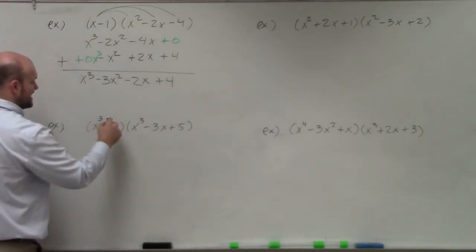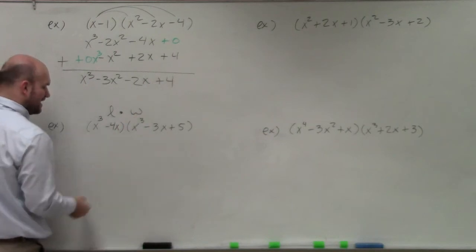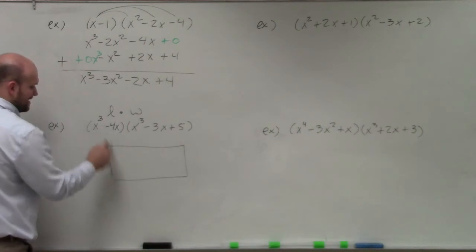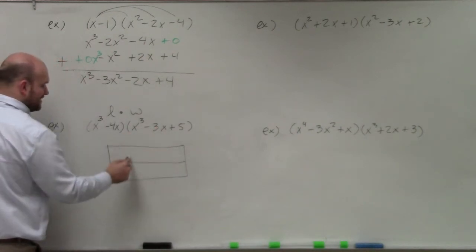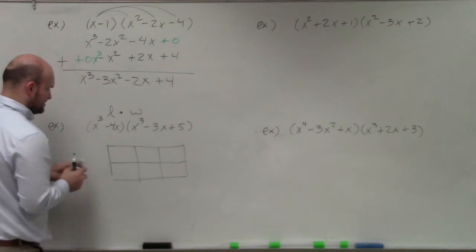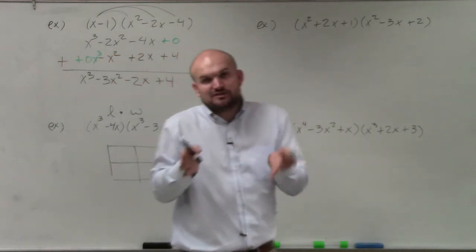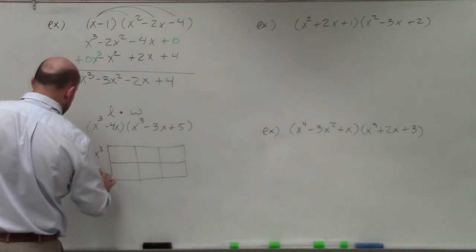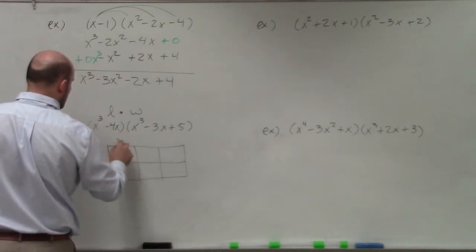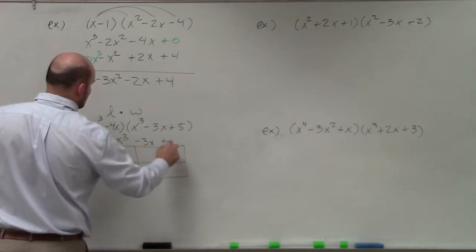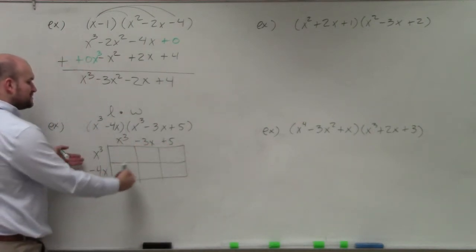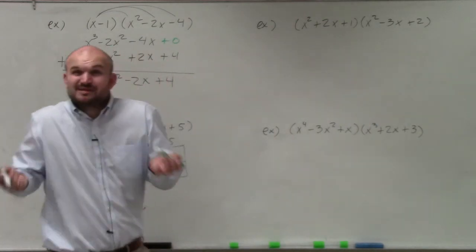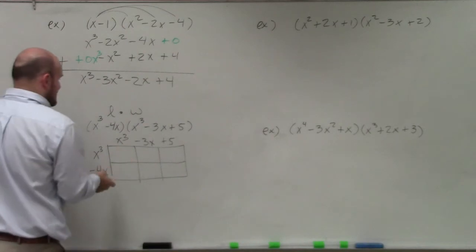The other way is to think of multiplication as length times width, which produces a rectangle. Based on how many terms you have, you create a side length to match — two terms gives a side of 2, three terms gives three sections. The idea is to get each and every term into its own row or column.